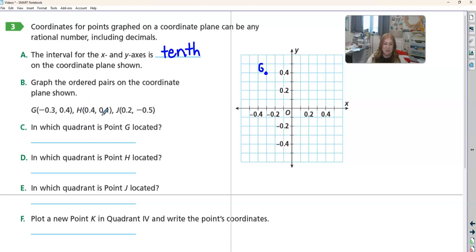Now we need H, which is positive 4 tenths, positive 1 tenth. So over right, we walk to our elevator. Then the elevator can take us up one floor there, 1 tenth. So there's H.